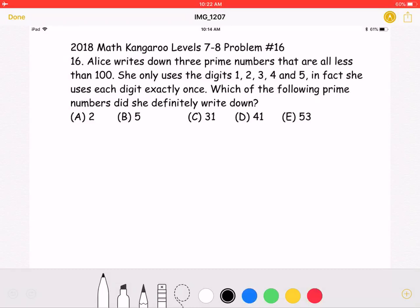Which of the following prime numbers did she definitely write down? A, 2, B, 5, C, 31, D, 41, or E, 53.